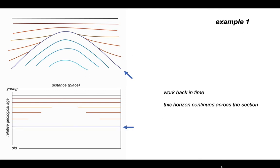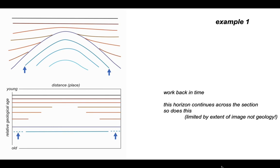As we continue down, the rocks within the fold itself can be found right across the profile, so they stretch across the entire chronostrat diagram. One horizon has two places where it does not continue, shown with a dashed line — this is not a geological termination but simply the limit of our interpretation to depth. Likewise for the horizon below and the one in the core of the fold. So there is the basic chronostrat diagram showing the extent of the horizons in their relative geological order.